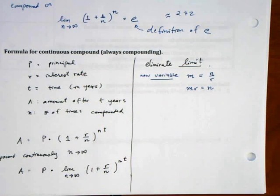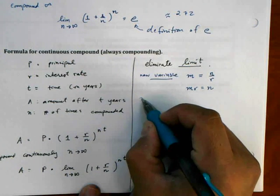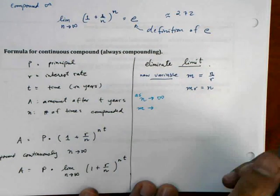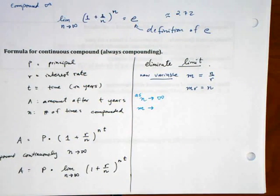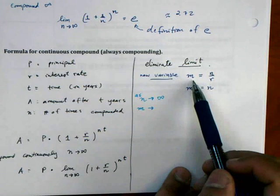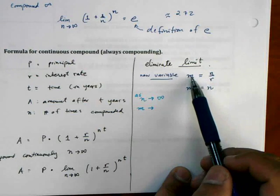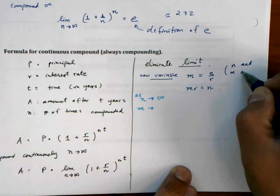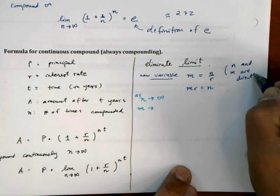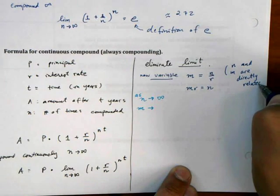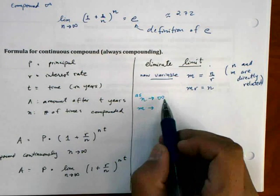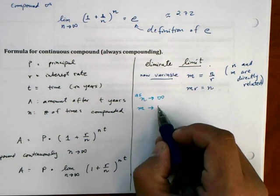Now consider this with me. And again, this is very weird math here. What happens as N approaches infinity? What happens to M? What does M approach? Well, because looking at this original equation, N and M are directly related. Or they vary directly. So as N gets bigger, M gets bigger. So as N goes towards infinity, M also goes towards infinity.